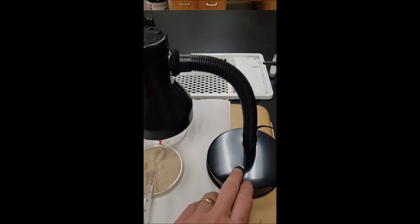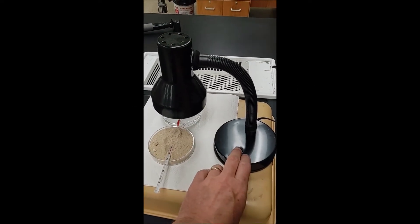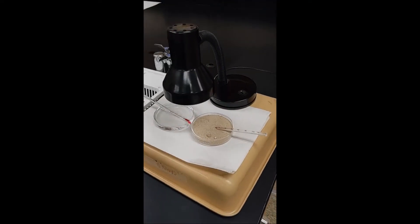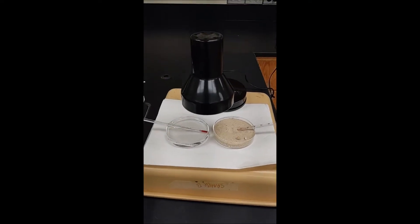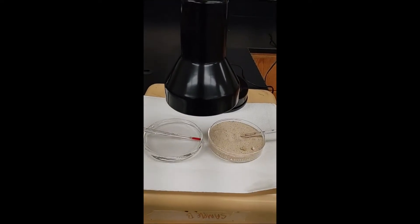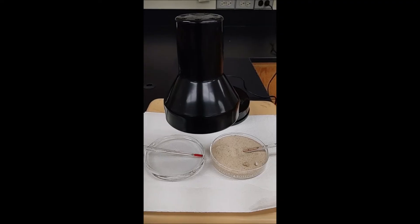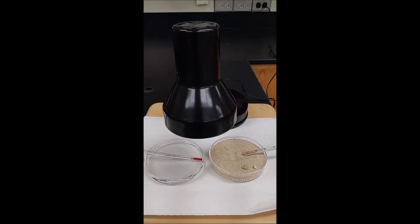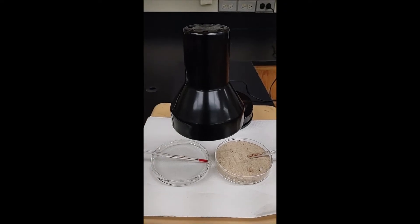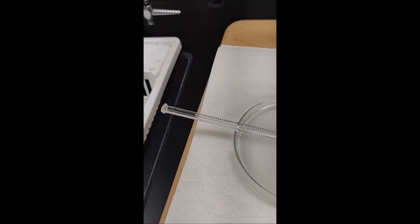This is Activity 5, where we have a gooseneck lamp which is supposed to represent the sun. We're going to be shining this gooseneck lamp equally on a petri dish of water and approximately equal amount of sand in a second petri dish. You can see the starting temperatures.